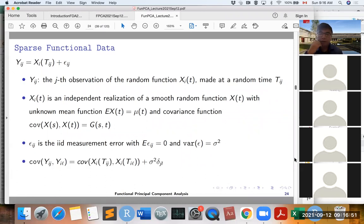So then we can calculate the covariance function of Y_IJ and Y_IL equal to the covariance function of X_IT at time T_IJ and T_IL, plus sigma squared times delta_JL, because we have this measurement error epsilon_IJ.